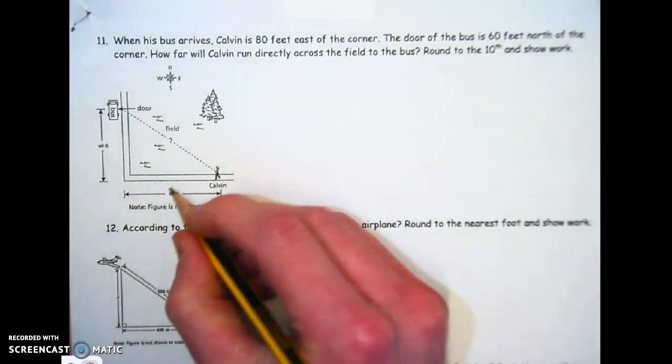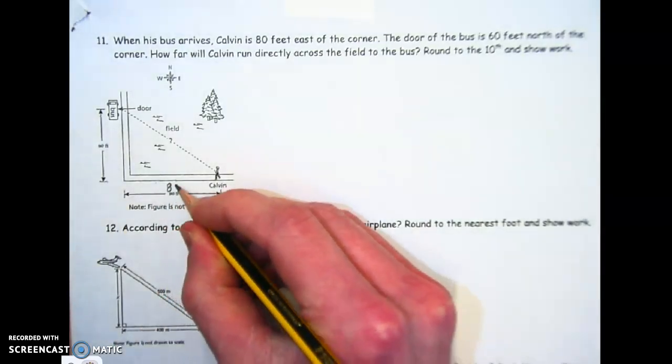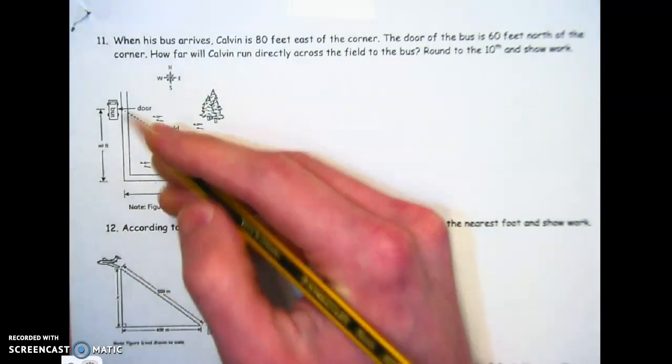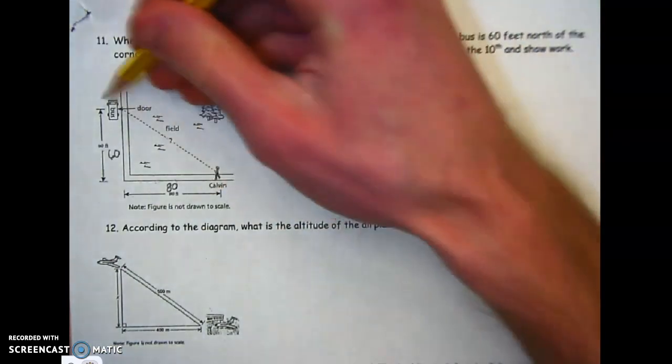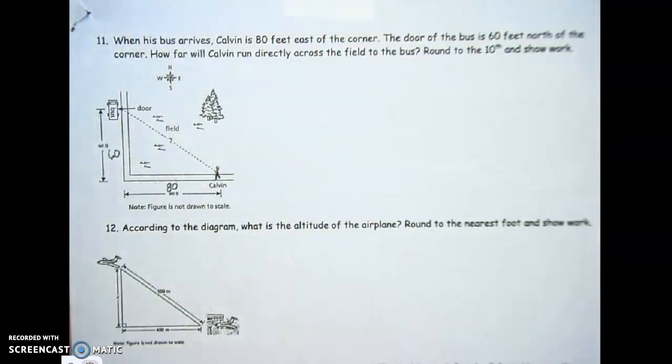This is actually 80 feet if you can't read that, and this one up here is 60. Let's go ahead and see what that diagonal is going to be - that would be the hypotenuse of that right triangle that's formed.